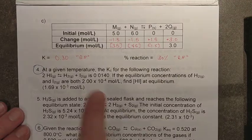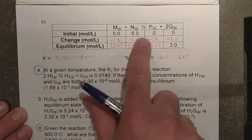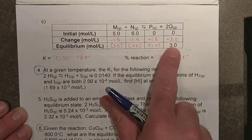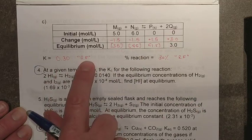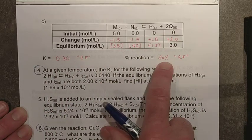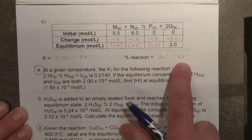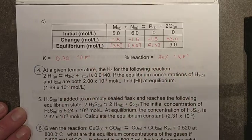All right, so for 3C, there's the completed ICE table. You can try that. Calculate K, you should get 0.30, therefore it's reactant favored, and then 30 percent, percent reaction or percent yield for a reactant favored, and so they correlate again.